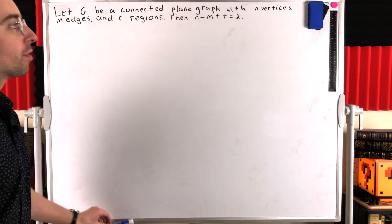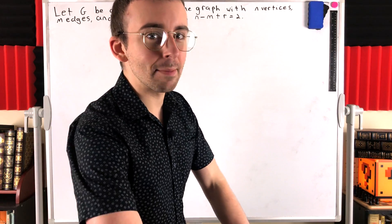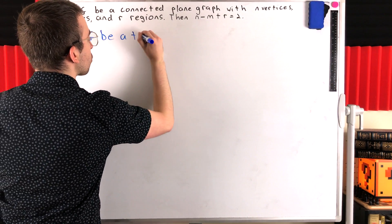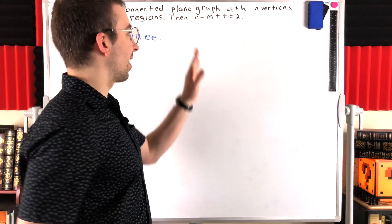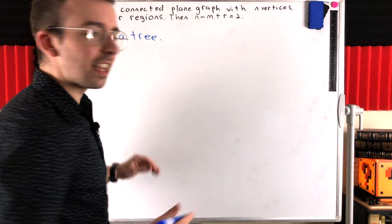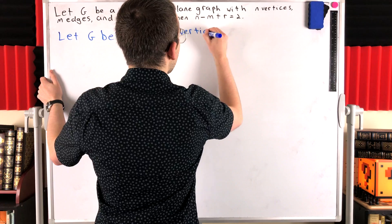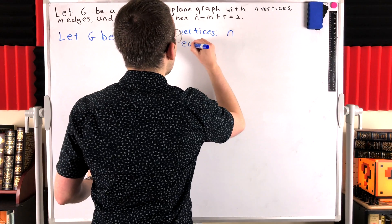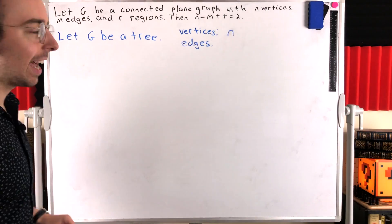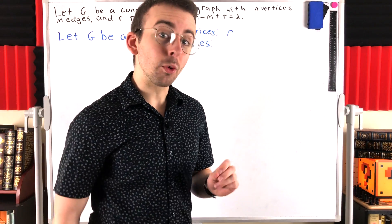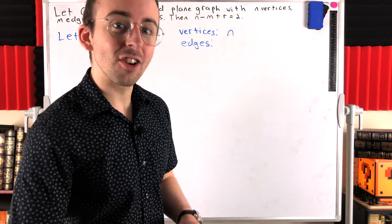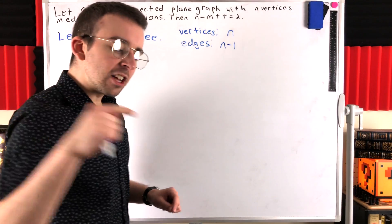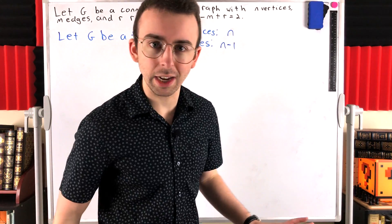So the first thing we're going to do is prove the result for connected plane graphs that are tree graphs — meaning they have no cycles. Let G be a tree. If G is a tree, it's pretty easy to verify that Euler's formula is going to hold. Our tree graph G has N vertices. How many edges does it have? Every tree graph has one less edge than it has vertices, so that's N minus one edges. If you're not familiar with that result, check the description.